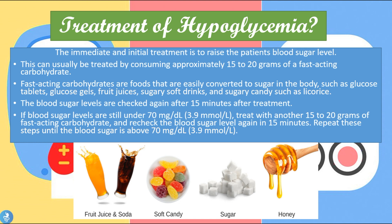Treatment of hyperglycemia: the immediate and initial treatment is to raise the patient's blood sugar levels. This can usually be achieved by consuming approximately 15 to 20 grams of a fast-acting carbohydrate. Fast-acting carbohydrates are foods easily converted to sugar in the body, such as glucose tablets, glucose gels, fruit juices, sugary soft drinks and sugary candy such as licorice. The blood sugar levels are checked again after 15 minutes, and if still under 70 milligrams per deciliter, we treat again with another 15 to 20 grams of a fast-acting carbohydrate and recheck in 15 minutes. These steps are repeated until the blood sugar level rises above 70 milligrams per deciliter.